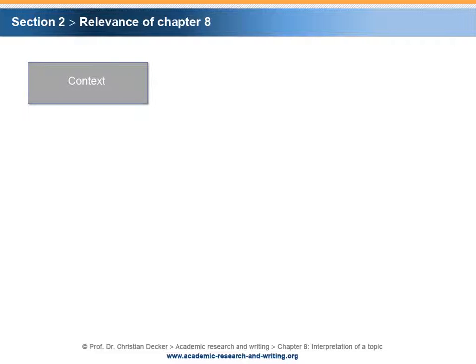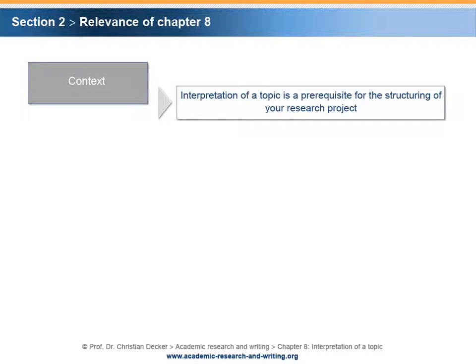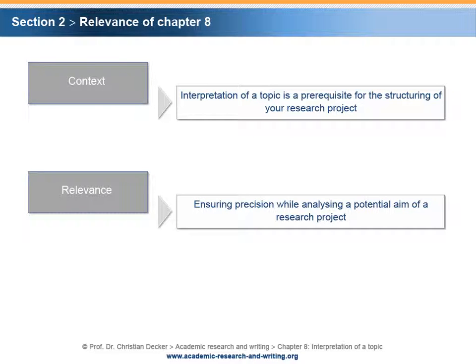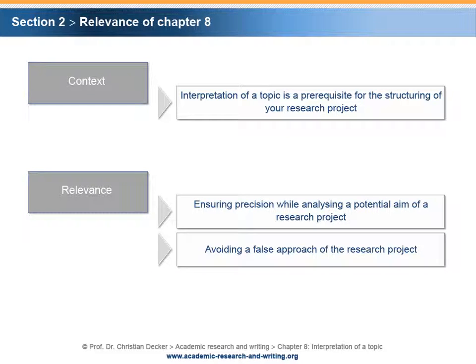Accordingly, the context of this chapter is to come up with an interpretation of a topic as a prerequisite for the structuring of your research project. Why is it relevant to start with an interpretation of a topic before you structure your research project? First of all, interpretation ensures precision while analyzing a potential aim of a research project. Thereby, a false approach of a research project can be avoided.